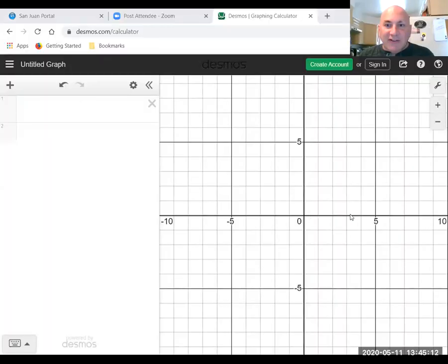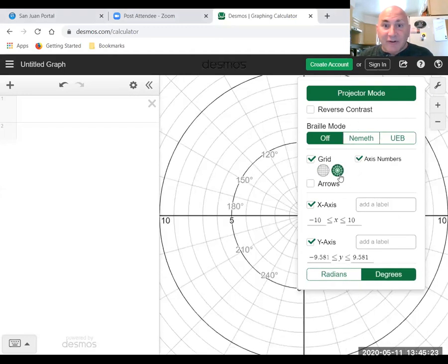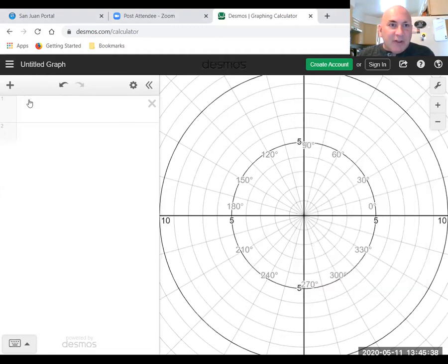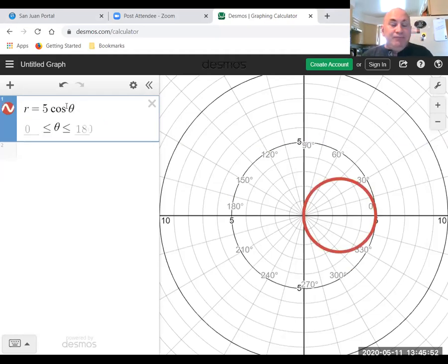So we're going to go to Desmos here. And you'll notice that it's in X, Y coordinates and it's in rectangular form. I'm going to click on the settings here. And I'm going to go to polar. I'm in degree mode. I'm also going to turn on projector mode. That makes things a little darker, easier to see when you project. So let's do my first graph. R equals five cosine, and then I don't know how to do the symbol for theta. I'm just going to type theta.